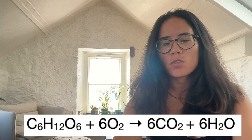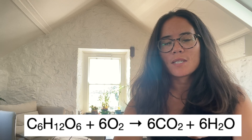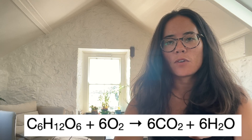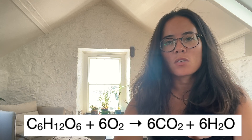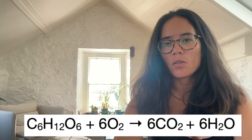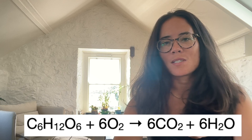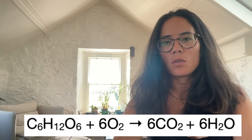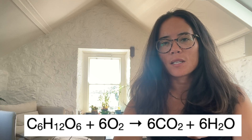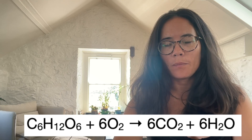Make sure you can write the symbol equation as well. The sixes are important for balancing: 6O₂ plus C₆H₁₂O₆, which is the formula of glucose, goes to 6CO₂ plus 6H₂O.